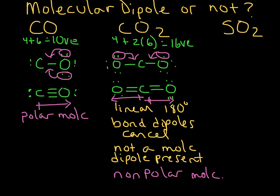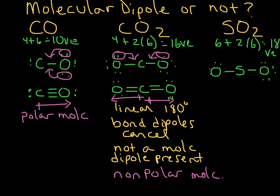Our last molecule is sulfur dioxide. We add up the valence electrons: 6 for sulfur plus 2 times 6 for oxygen, giving us 18. Drawing the Lewis structure by bonding the oxygens to sulfur and distributing electrons — 2, 4, 6, 8, 10, 12, 14, 16 — we realize we have 2 left, which we must place on the central atom. This is why it's so important to count valence electrons: we find that sulfur actually has a lone pair.